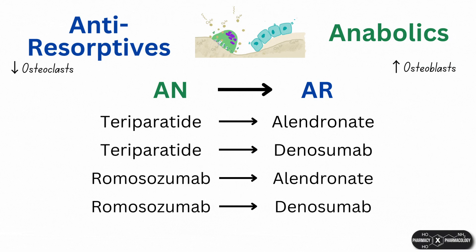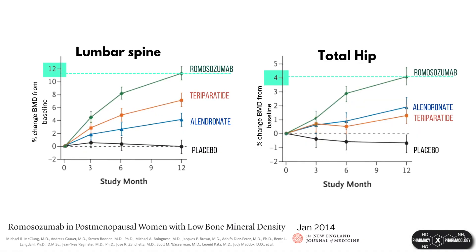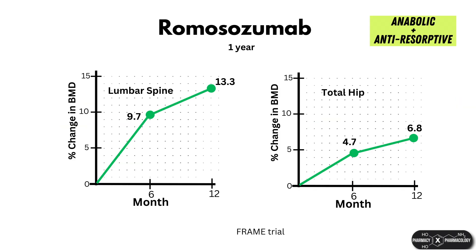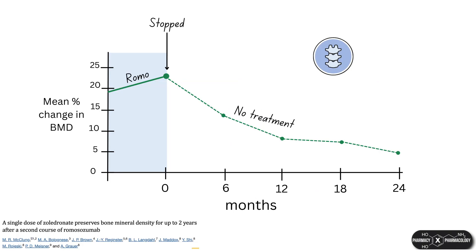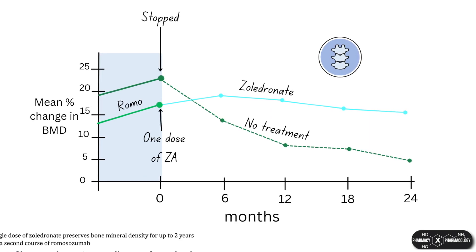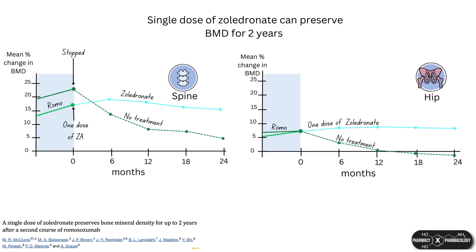Moving to romosozumab-to-alendronate. Romosozumab gives the highest BMD gains at the spine and hip compared to other agents, but its effects are limited to one year. The ARCH study shows that after one year of romosozumab with 14% spine BMD gain, the gain was still around 15% two years after switching to alendronate—a good regimen. A study by McClung et al. found that a single dose of zoledronic acid after romosozumab similarly maintained BMD gains for two further years, which would be more convenient for patients than weekly alendronate.